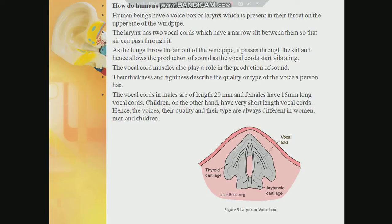How do humans produce sound? Human beings have a voice box, or larynx, which is present in the throat on the upper side of the windpipe. The larynx has two vocal cords with a narrow slit between them so that air can pass through. As the lungs push air out through the windpipe, it passes through the slit, allowing production of sound as the vocal cords vibrate. The vocal cord muscles play an important role in the production of sound - their thickness and tightness determine the quality and type of voice a person has. Vocal cords in males are 20 millimeters long and in females 15 millimeters long, so the size of the vocal cords plays an important role in the quality of sound. Children have very short vocal cords, which is why the voices of males, females, and children vary.